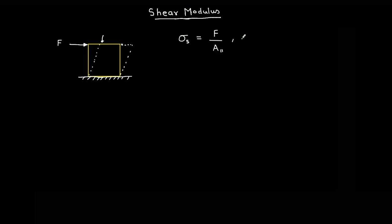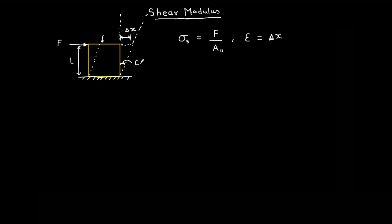How do we quantify deformation? The length is L — you could look at the angle, or say how much is the displacement delta x. But if you take a larger length of the solid, delta x will be different — delta x will be more. So angle is a better representation. Let's say angle is theta. Theta remains the same regardless of the length. So epsilon is basically theta, which is roughly equal to tan(theta) because theta is very small, and tan(theta) is delta x by L.